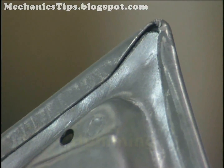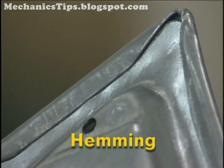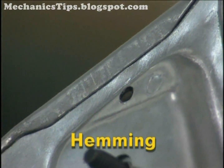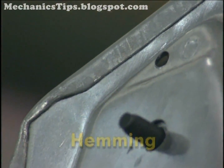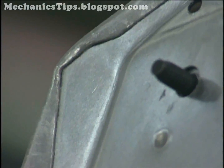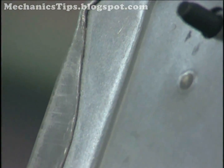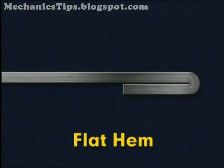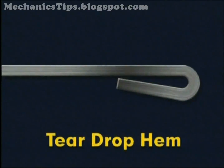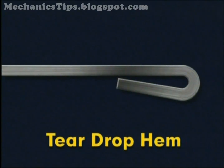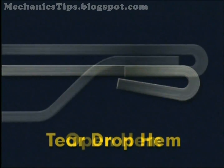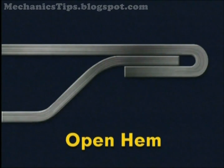In sheet metal forming, hemming is utilized primarily to provide a smooth rounded finished edge and to attach sheet metal parts together. There are four basic types of hems: the flat hem, which can be used with materials having high ductility; the teardrop hem, which is used on materials lacking the ductility required to form the flattened hem without cracking; and the open hem and the rope hem, which are used to join sheet metal parts together.